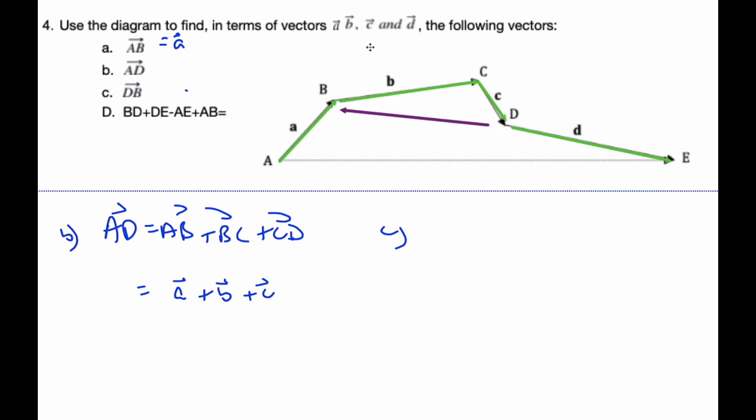When I want to do that, what I could do is I want DB. Well, I can do D to C plus C to B. Well, D to C I know is negative c, and then this is negative b.